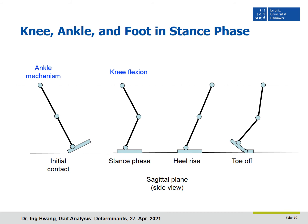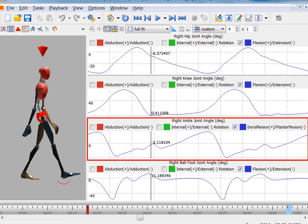The fourth one is the ankle mechanism in the initial stance phase, which is during heel strike. The fifth one is the foot mechanism in the terminal stance phase, such as at heel rise and toe-off. We will see these determinants through the software.